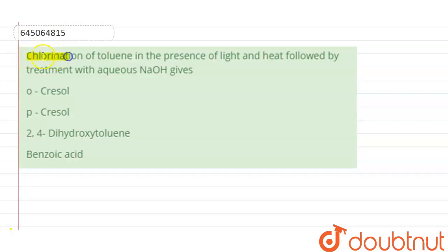Hello students, the question is: chlorination of toluene in presence of light and heat followed by treatment with aqueous NaOH gives ortho-cresol, para-cresol, 2,4-dihydroxy toluene or benzoic acid.